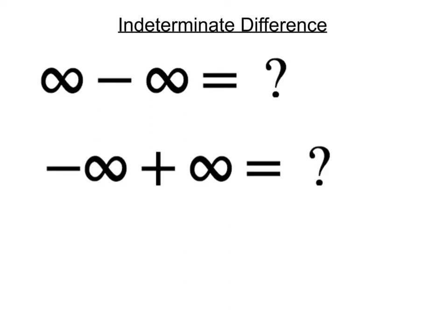In this lesson, we're going to be taking a look at indeterminate differences. These are situations where we don't necessarily know what the limit is going to be approaching. You see here the two types of situations: the first is if you have infinity minus infinity, the second is negative infinity plus infinity. The question really is, what is it going to equal? It's going to depend on the original equation involved with the limit in question.